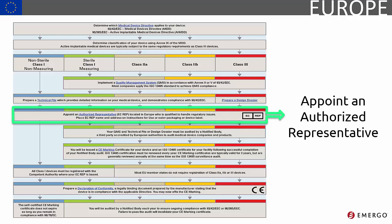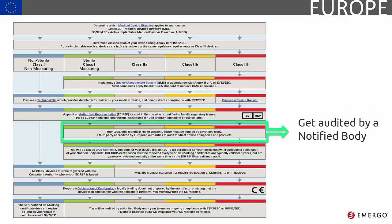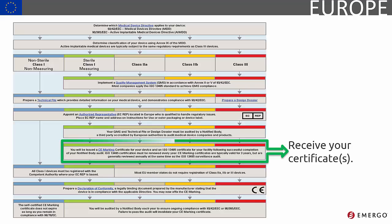If you don't have an office in the EU, you'll need to appoint a regulatory liaison known as an authorized representative. The next step involves passing an audit conducted by a notified body. The audit covers your quality system as well as your technical file. Upon successful completion of the audit, your notified body will issue you your certificates.